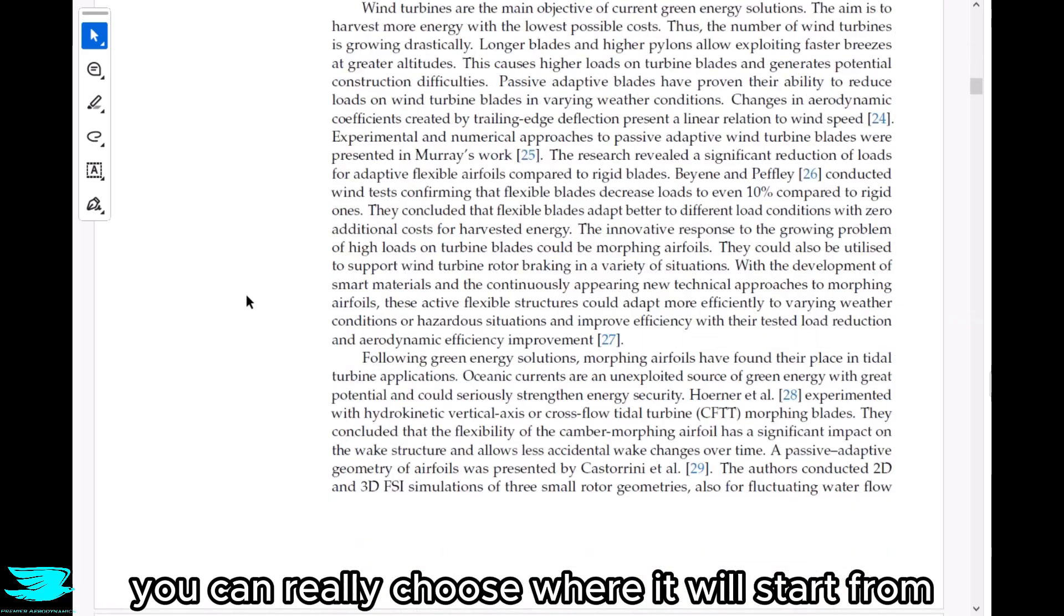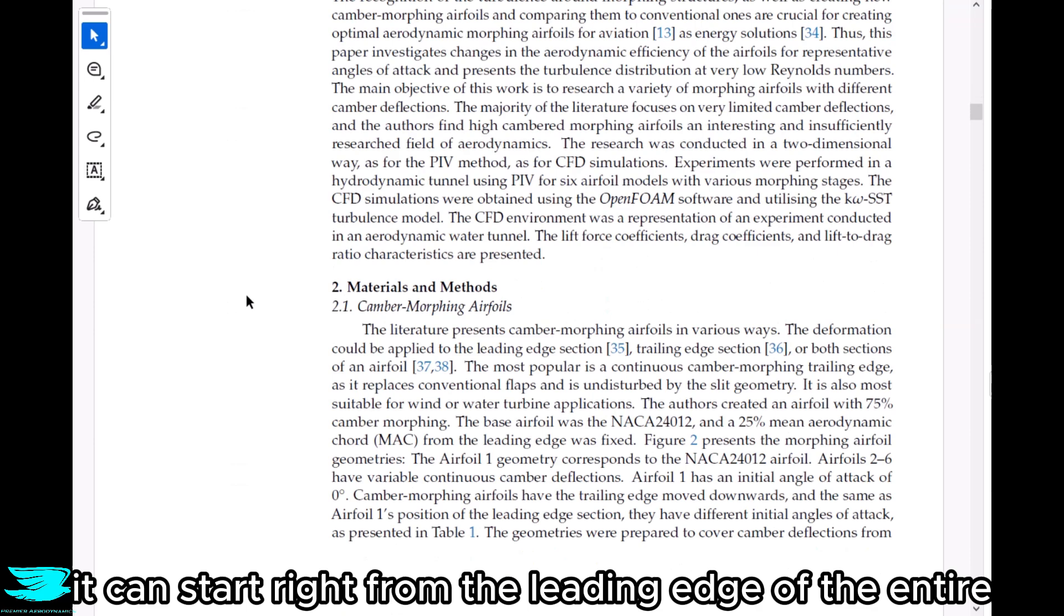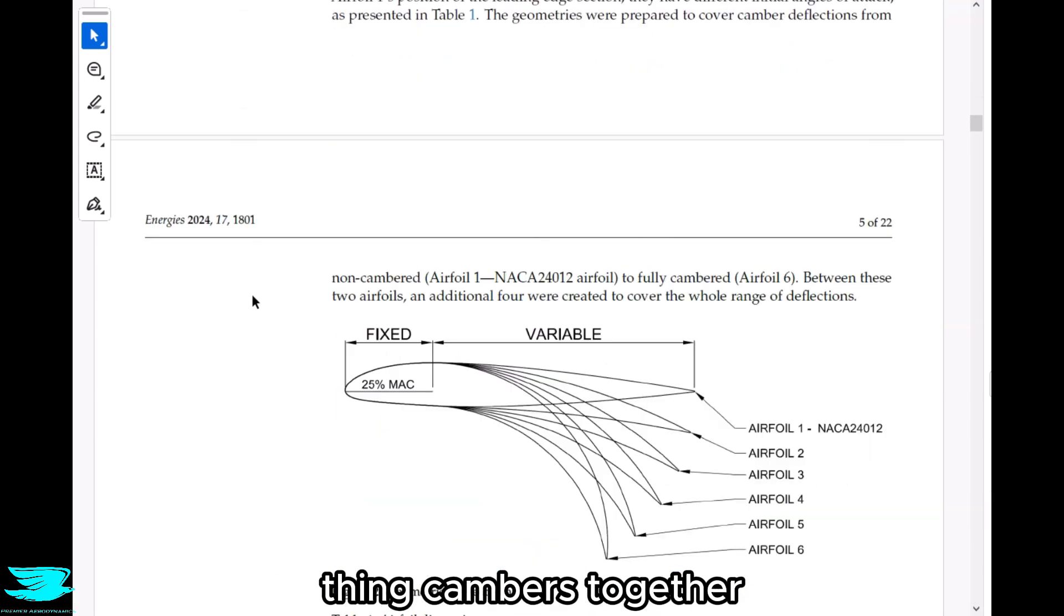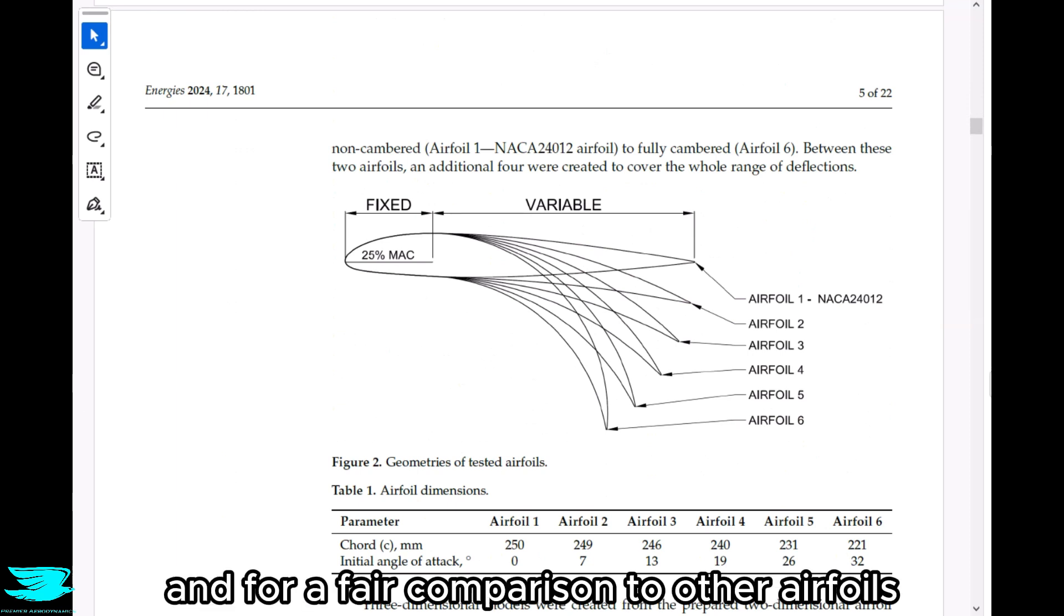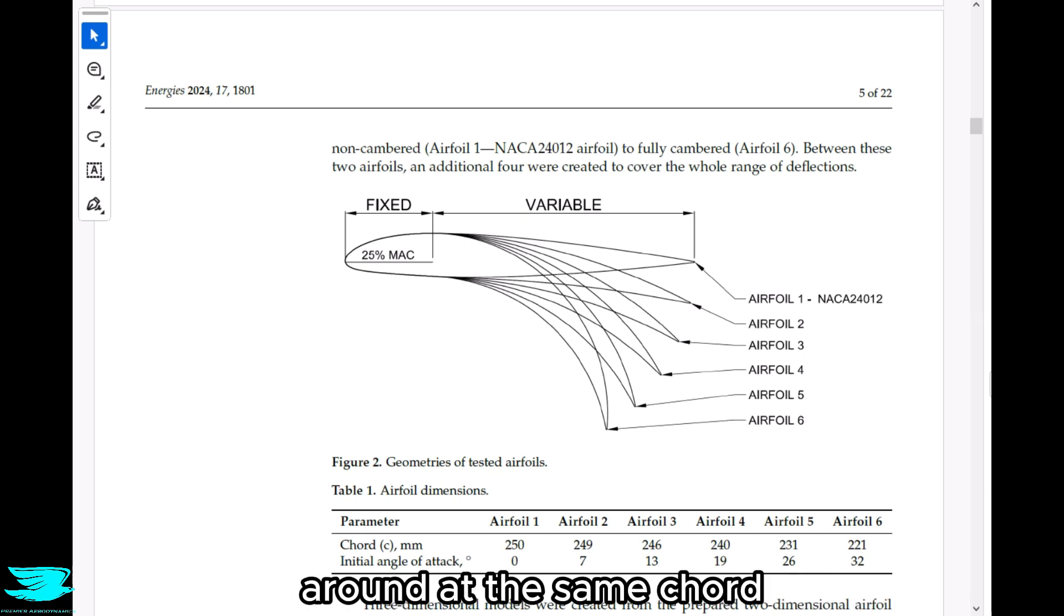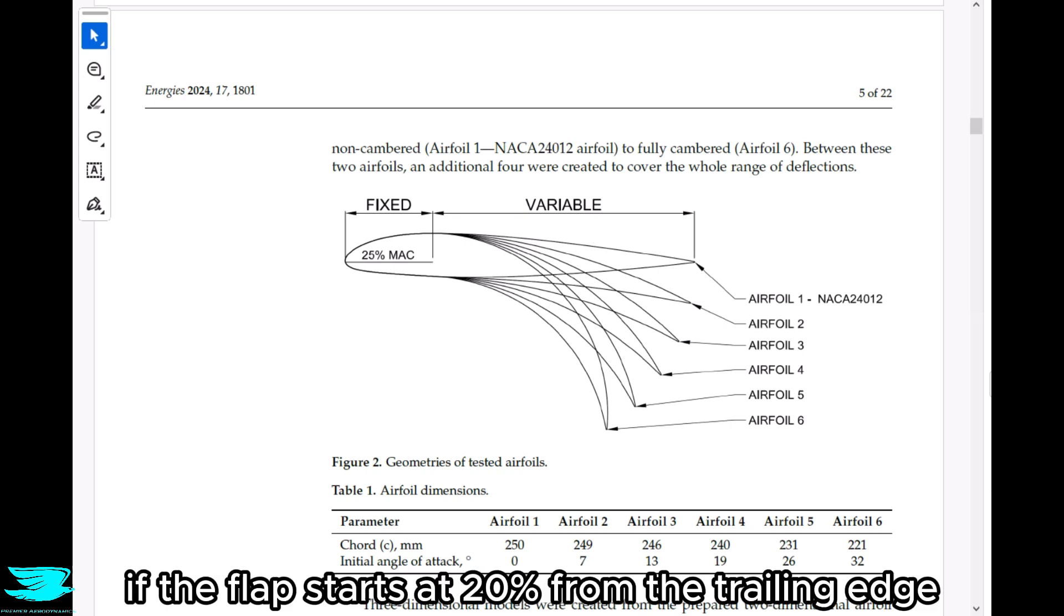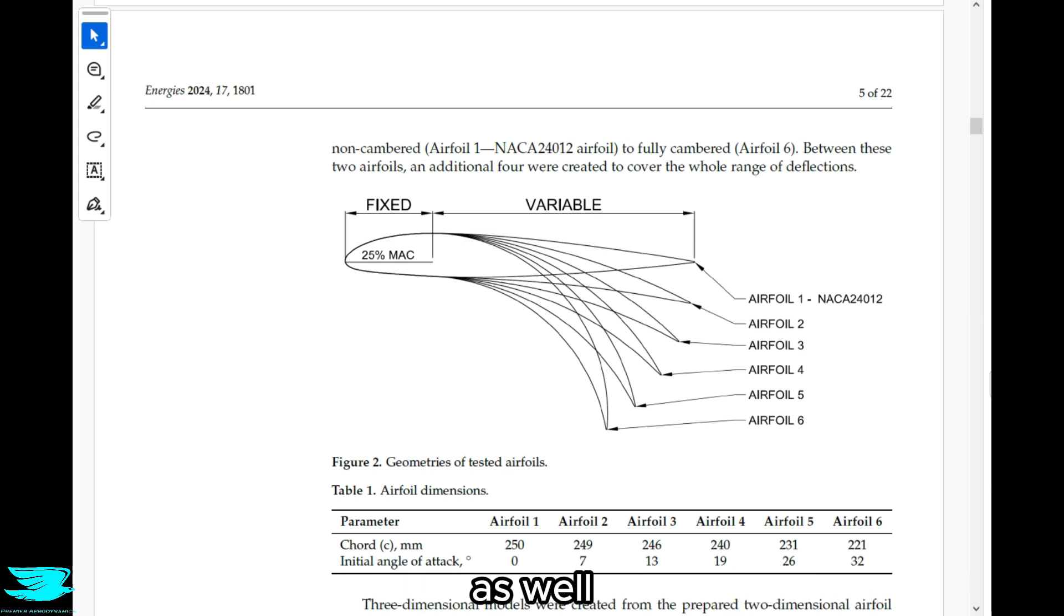So in terms of how the wing can flex, you can really choose where it will start from. For example, it can start right from the leading edge where the entire thing cambers together, or it can go from the trailing edge or very close to it. And for a fair comparison to other airfoils, like one that would have a trailing edge flap, I'd imagine you want it to start flexing around the same chord location as where the flap starts. So for example, if the flap starts at 20% from the trailing edge, then you'd probably want to have the flexing starting from about there as well.